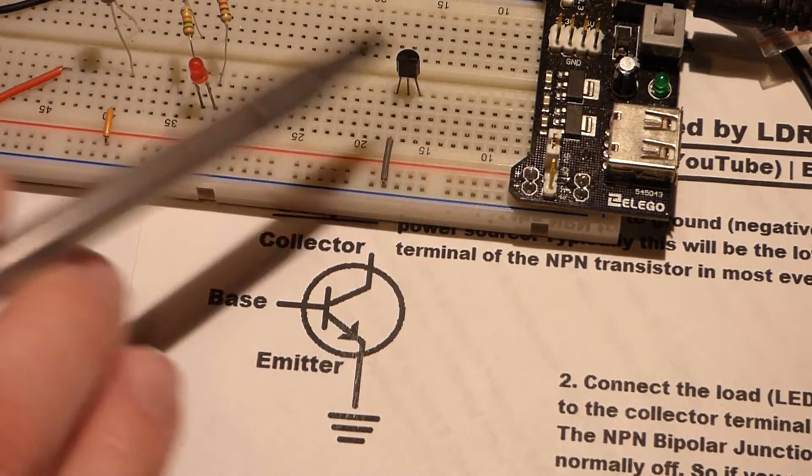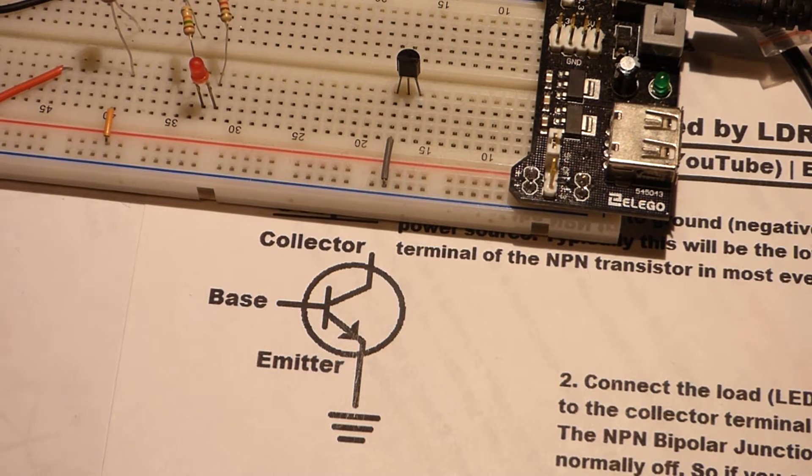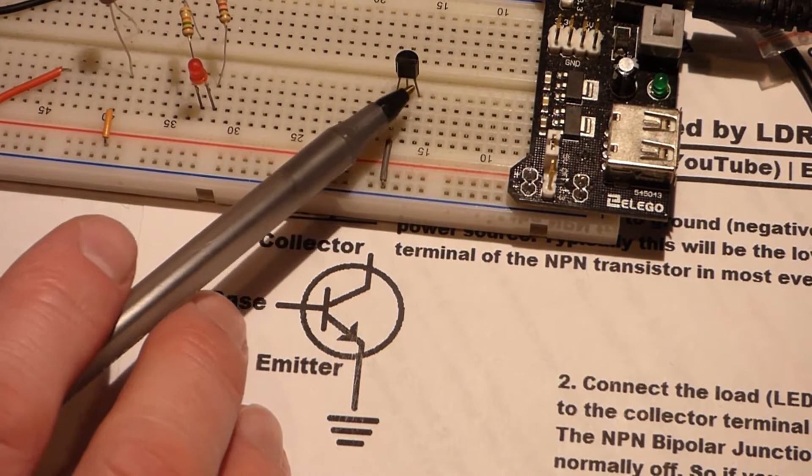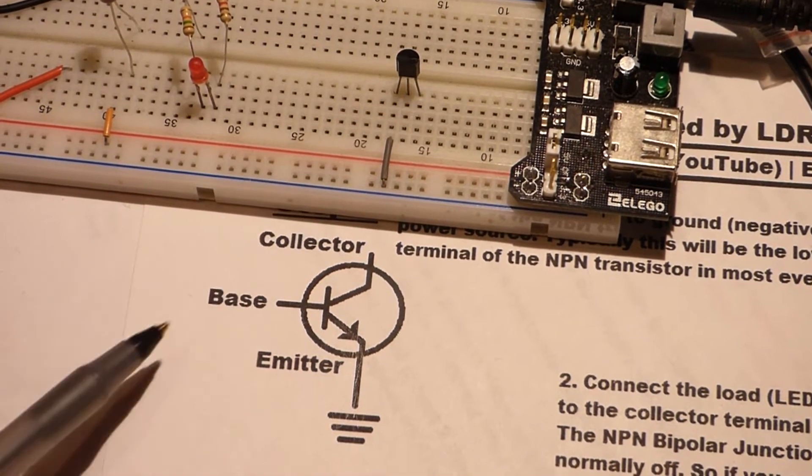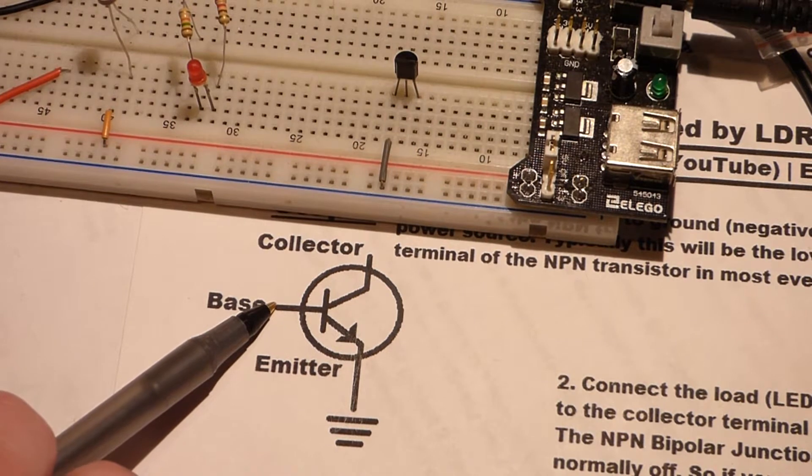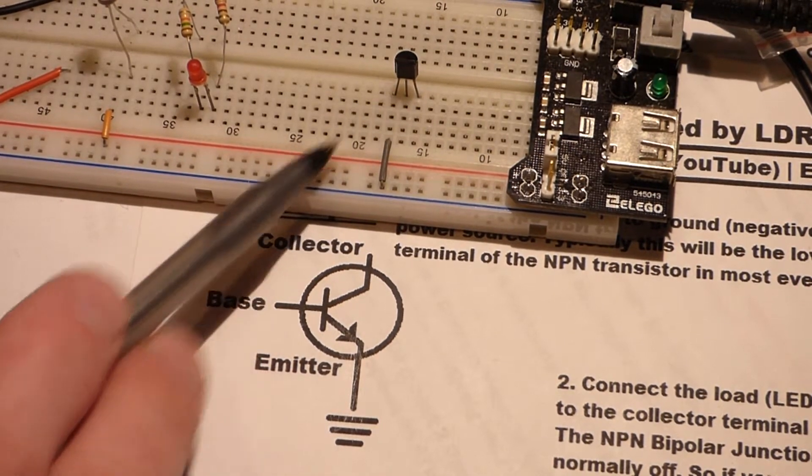All right, so now we're going to begin with the transistor. The transistor is the only thing that actually turns on and off. The LED turns on and off because the transistor is on or off. The LED is just responding to whether the transistor is on or off like a switch.